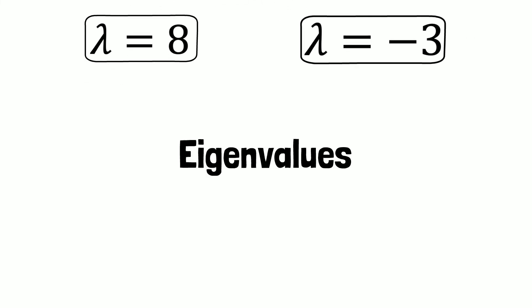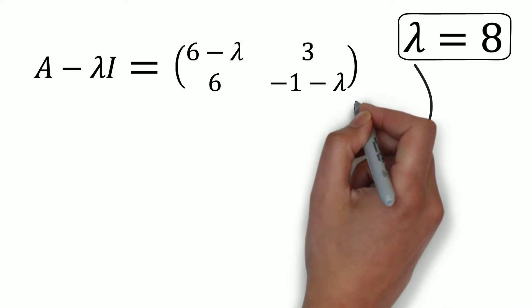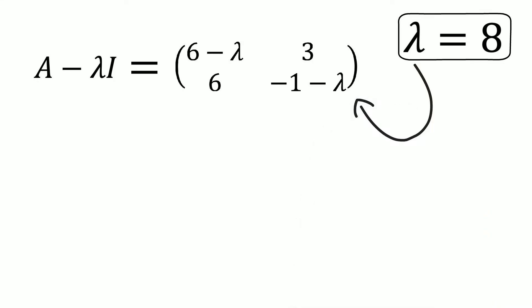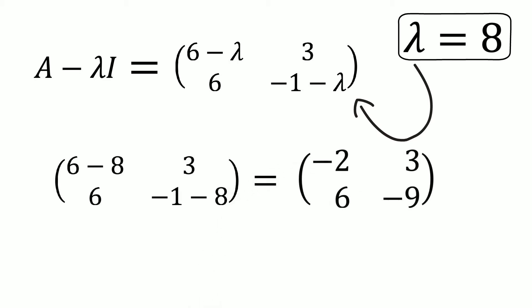We can use these eigenvalues to calculate the eigenvectors. We will start by using the eigenvalue lambda equals 8. Remember that A minus lambda I gave us the matrix with entries 6 minus lambda, 3, 6, and minus 1 minus lambda. We will now substitute our eigenvalue of 8 for the lambdas. This gives us the matrix with entries 6 minus 8, 3, 6, and minus 1 minus 8. When we calculate this we find the matrix with entries minus 2, 3, 6, and minus 9.